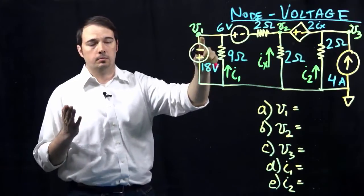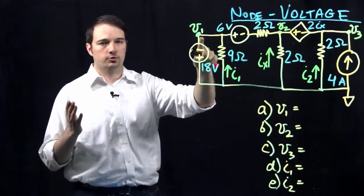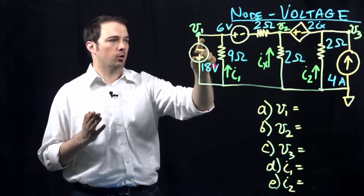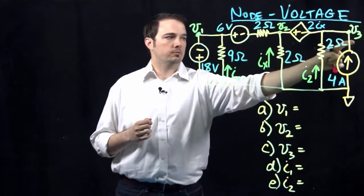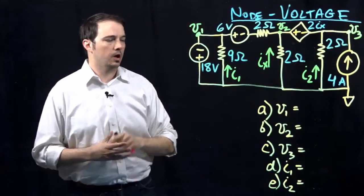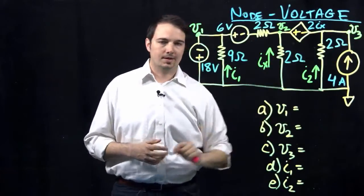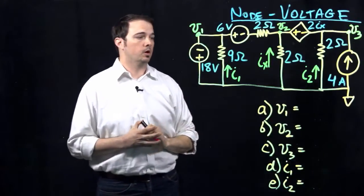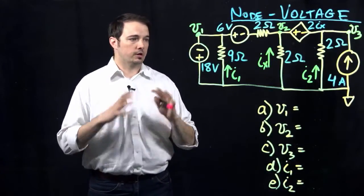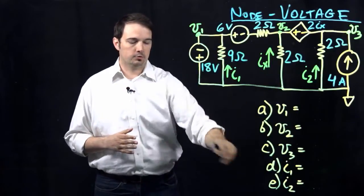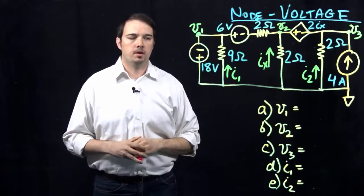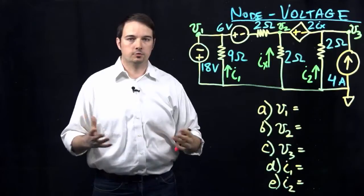And then I've already gone ahead and predefined the node voltages that we're going to try to find, noting V1 here, V2 in the middle, and V3 to this side over here. Again, also note that I've already indicated a reference, so that'll just immediately get us started. So go ahead and do that, copy this down, and then we're going to work through these five different parts of the problem in coming up with the final solution overall.